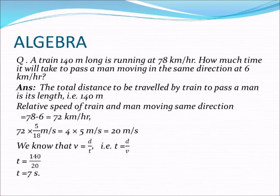Here distance is 140 meter and speed is 20 meter per second. Therefore time is 140 divided by 20, that is distance by velocity. 140 divided by 20 equals 7. So time equals 7 seconds. This is the answer: 7 seconds is required for the train moving at 78 kilometer per hour to pass a man moving at 6 kilometer per hour.